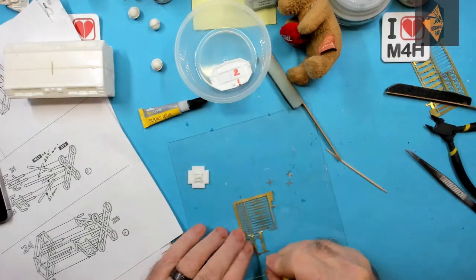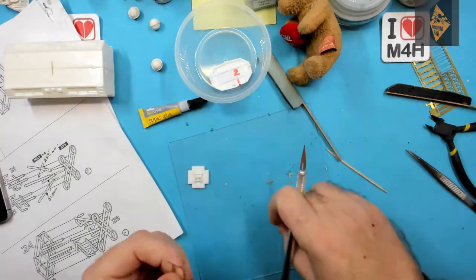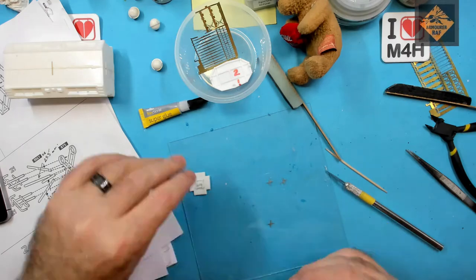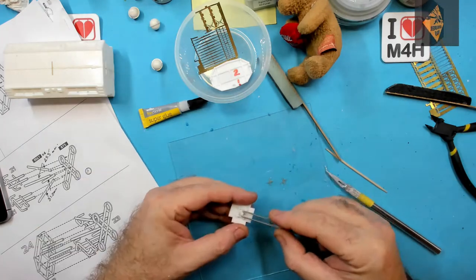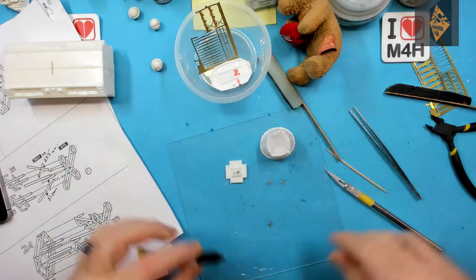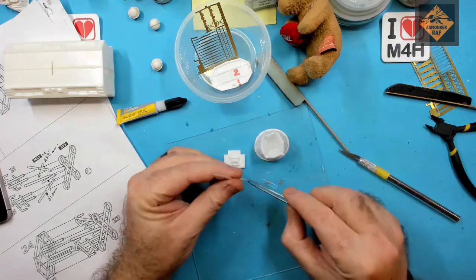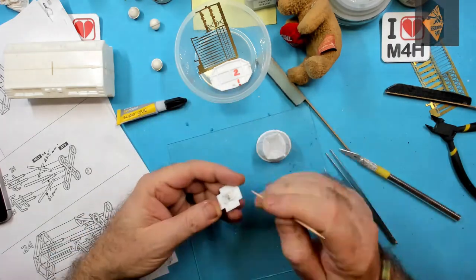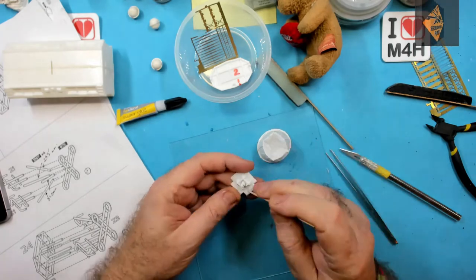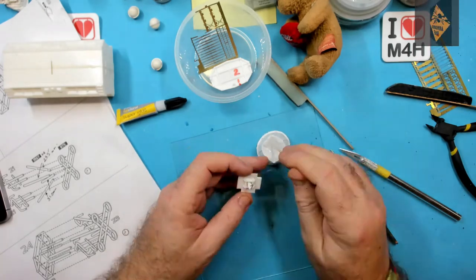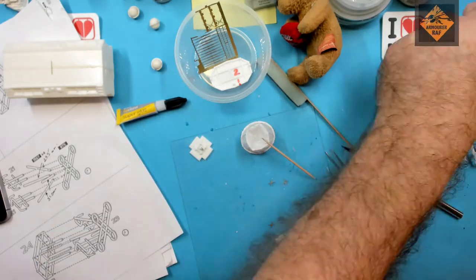Whenever I cut PE out, I always cut it on a piece of glass. The reason for this is there is no give in the glass, which means the PE doesn't bend. Also, I saw somewhere recently that it's a good idea to put sticky tape on the back of the PE sheet. This will stop the PE flying off into the big blue yonder. What a good idea.